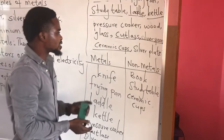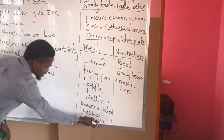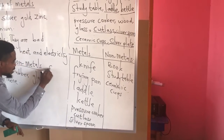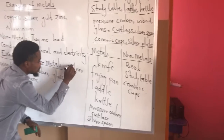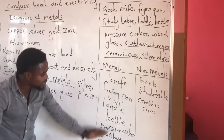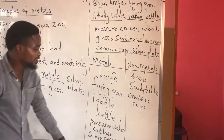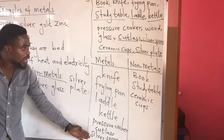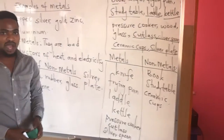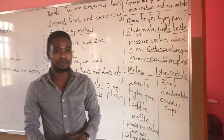And the last one is silver plates, which is under metal. So this is how we categorize materials under metals and non-metals. I believe you understand today's lesson. Hope to see you next time. Bye-bye.